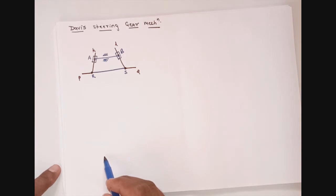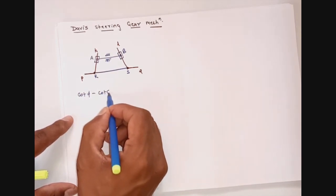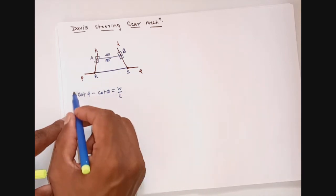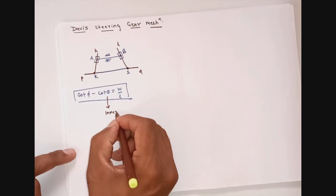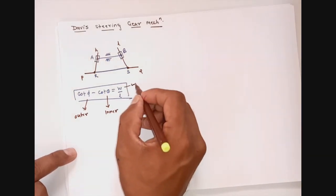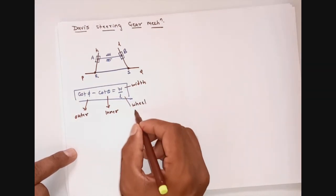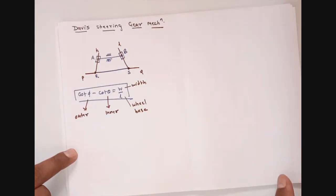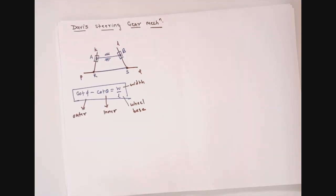For the fundamental equation of correct steering, we have seen that cot φ minus cot θ equals W by L, where θ is the angle turned by the inner wheel and φ is the angle turned by the outer wheel, W is the width of the vehicle frame, and L is the wheel base — the distance between the front axle and rear axle. We will now find the geometrical condition for the Davis steering gear mechanism such that it satisfies this fundamental equation.